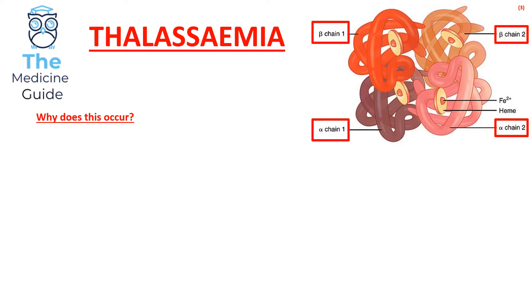The first disease we're going to focus on is thalassemia. Thalassemia is an autosomal recessive mutation where there is a missing globin chain. The haemoglobin molecule found within red blood cells consists of two alpha chains and two beta chains. Patients with alpha thalassemia have a missing alpha chain, and patients with beta thalassemia have a missing beta chain.